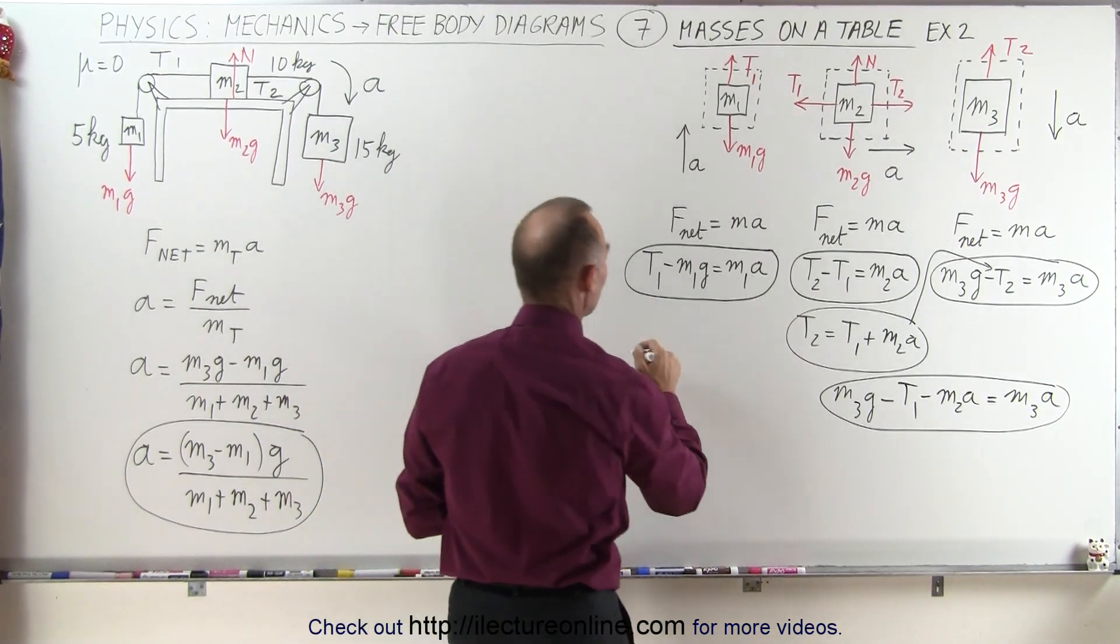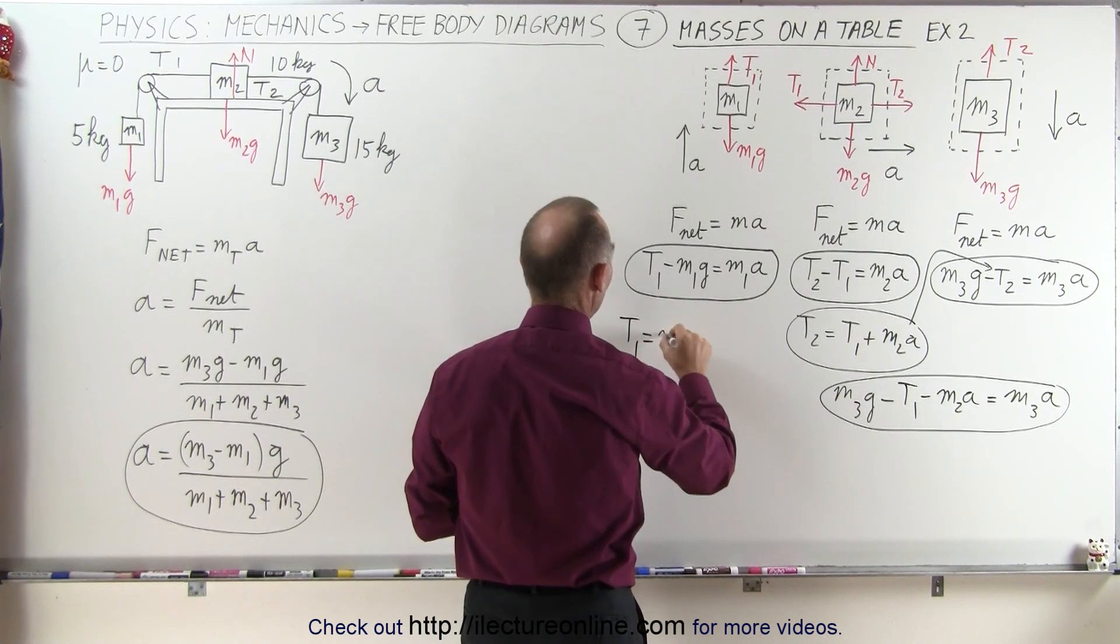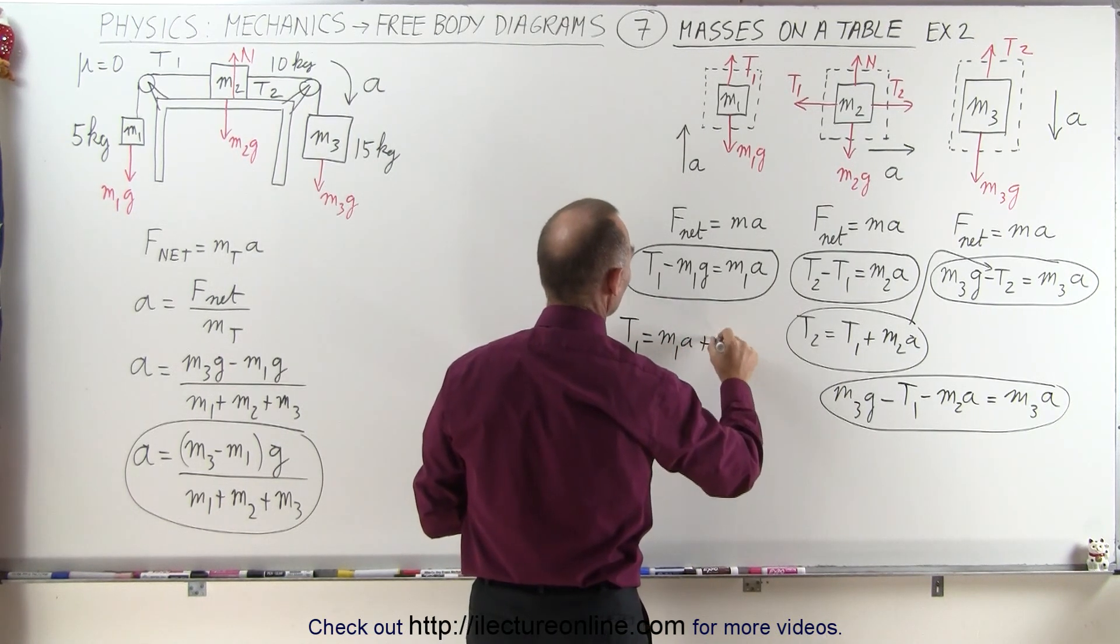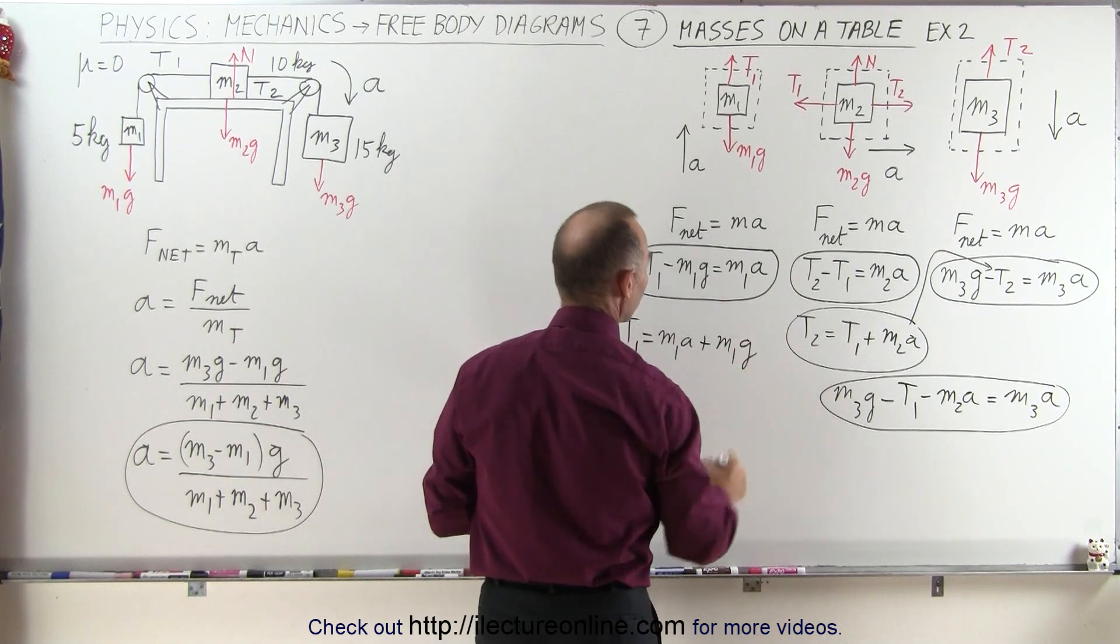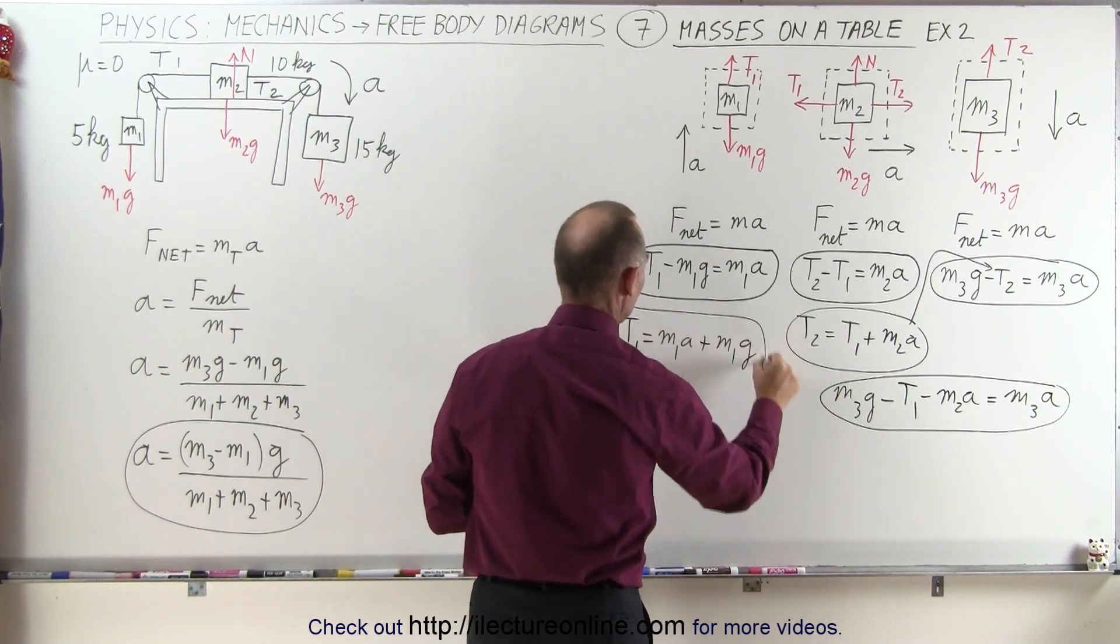So our first equation becomes the following: t1 is equal to m1a plus m1g. So let's box this one, that's our first equation.